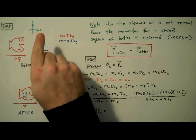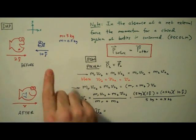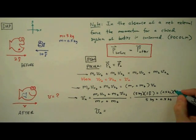We defined the direction to the right to be positive. The blue fish is moving to the left so its velocity needs to be written as negative 10 meters per second.